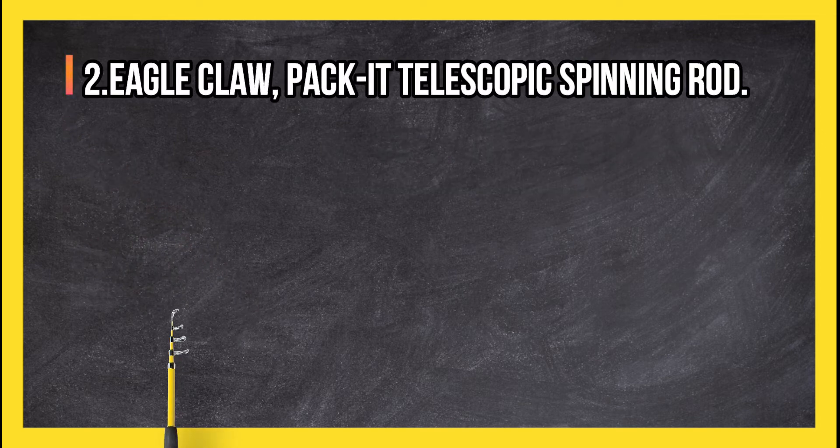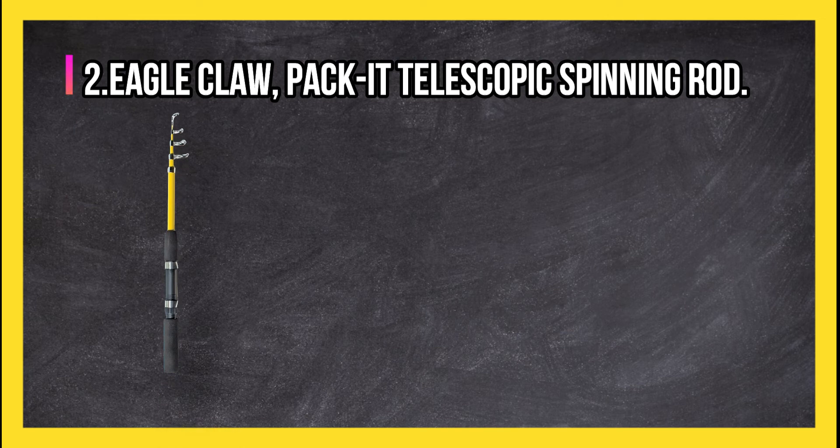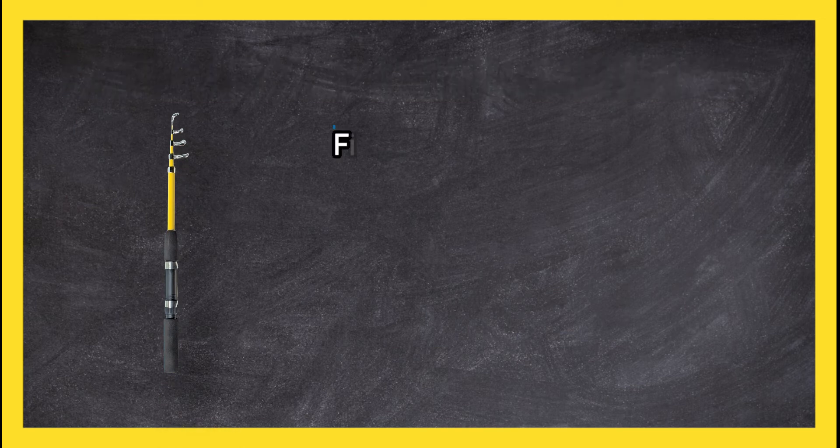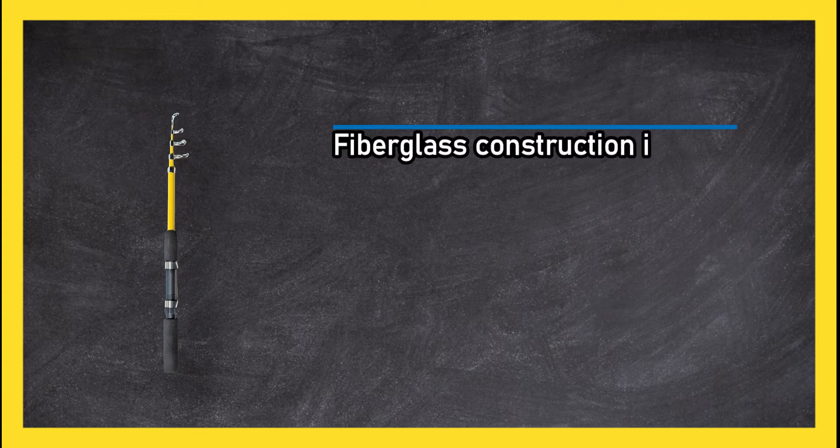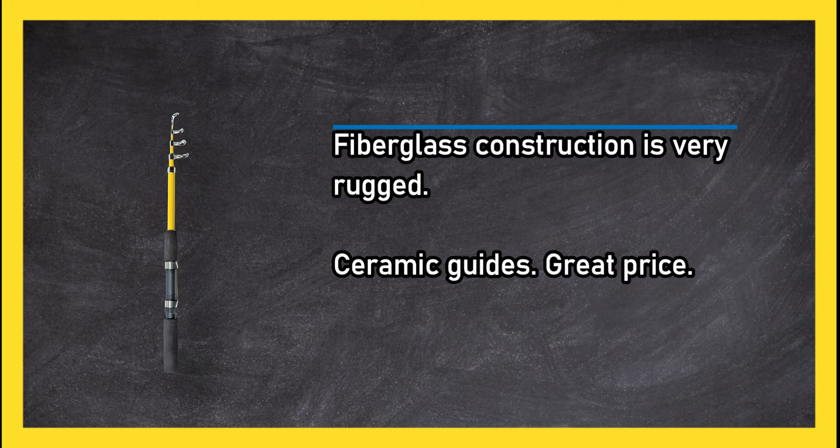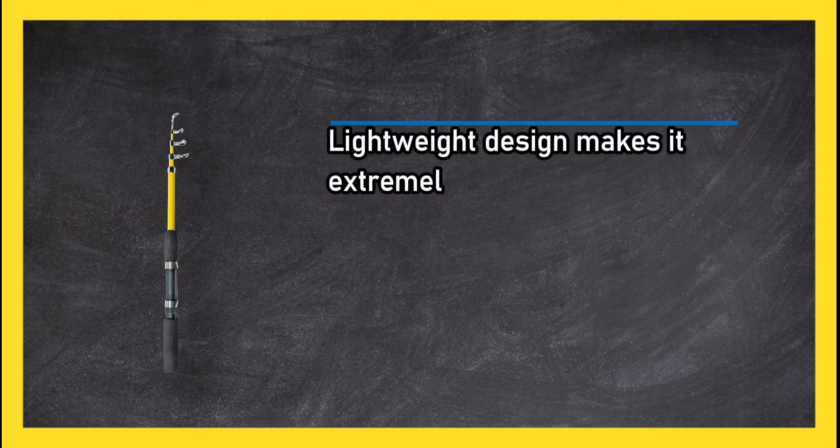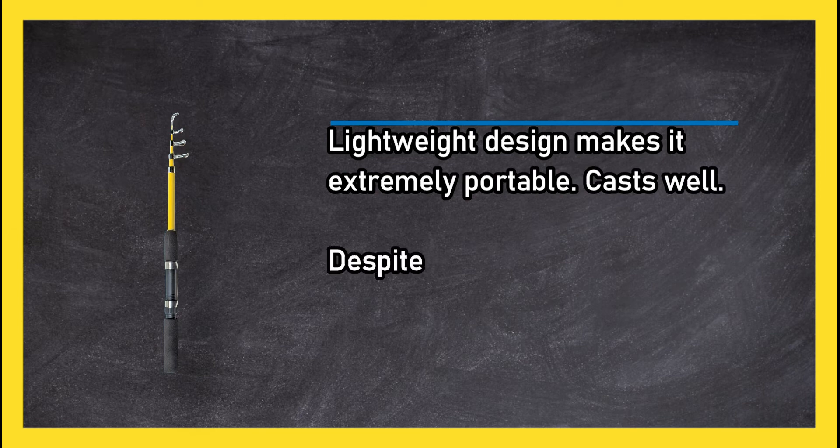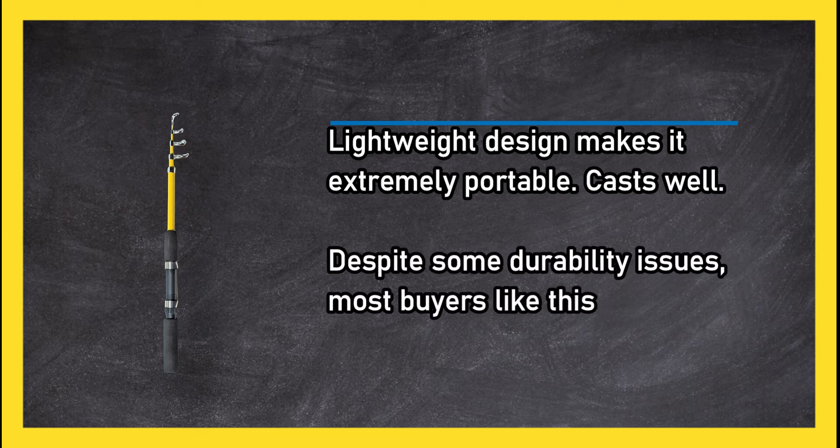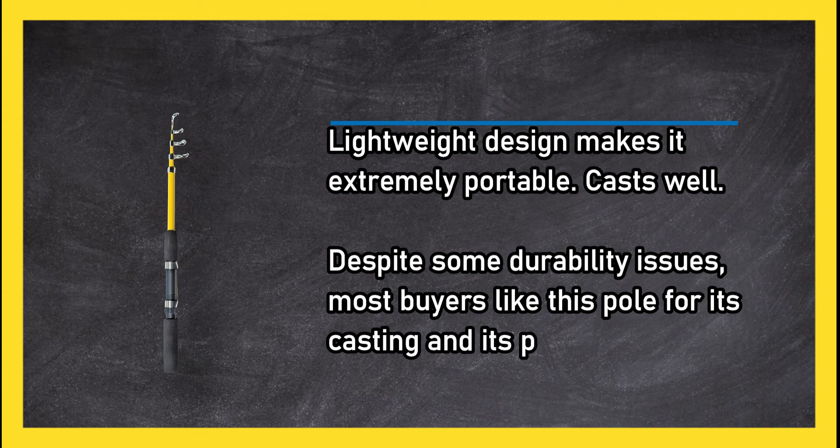At number two, Eagle Claw Packet telescopic spinning rod. Fiberglass construction is very rugged. Ceramic guides, great price, lightweight design makes it extremely portable. Casts well despite some durability issues. Most buyers like this pole for its casting and its price.